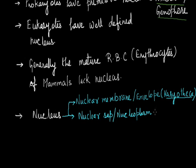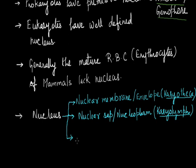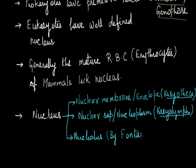The second part is the nucleoplasm, which is the fluid portion present inside the nucleus, also known as the karyo lymph. The third part of the nucleus is the nucleolus — a membraneless structure present inside the nucleus. The nucleolus was discovered by Fontana.